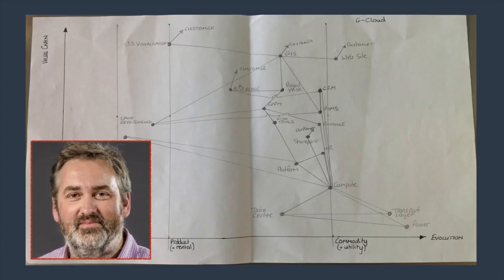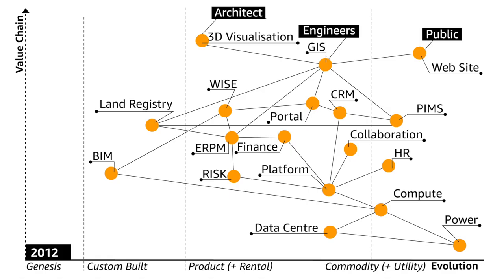So James did something different. James sat down on a Sunday afternoon and mapped it out — starting off with who are the core users, what are their needs, what are the components involved, and how evolved are those components? This was back in 2012, and then he sent me the map and said: how do you manage an environment that looks like this?